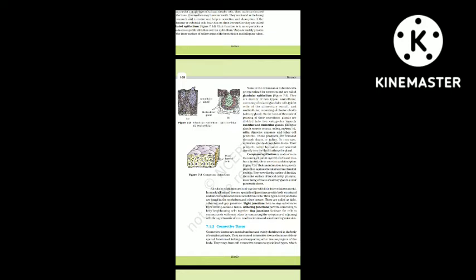All cells in epithelium are held together with little intercellular material. In nearly all animal tissues, specialized junctions provide both structural and functional links between individual cells. Three types of cell junctions are found in the epithelium and other tissues: tight, adhering and gap junctions. Tight junctions stop substances from leaking across a tissue. Adhering junctions perform cementing to keep neighboring cells together. Gap junctions facilitate the cells to communicate with each other by connecting the cytoplasm of adjoining cells for rapid transfer of ions, small molecules and sometimes large molecules.